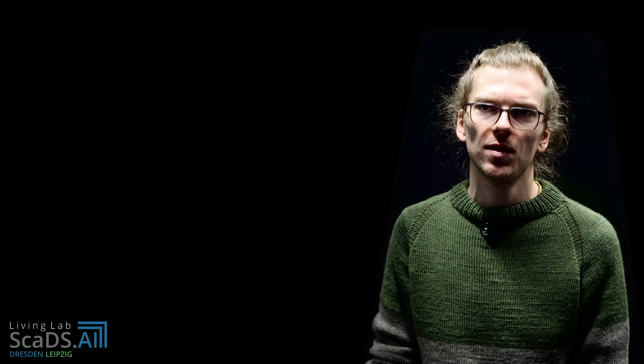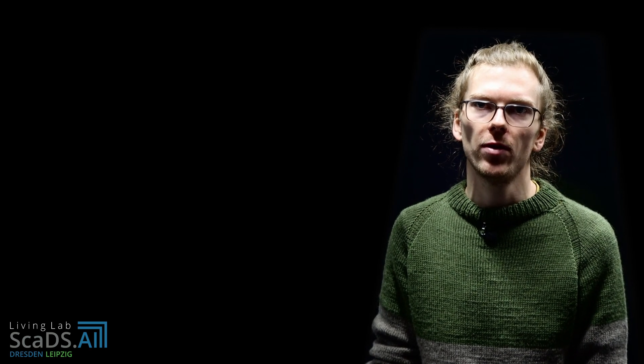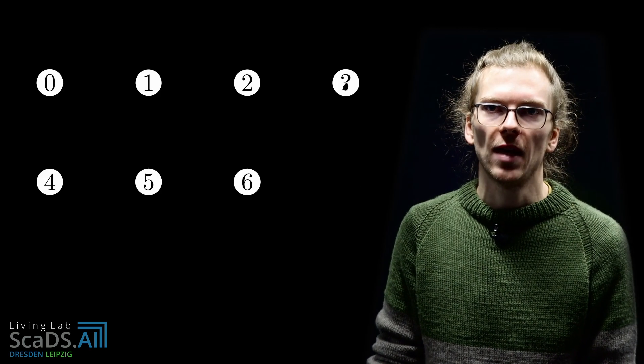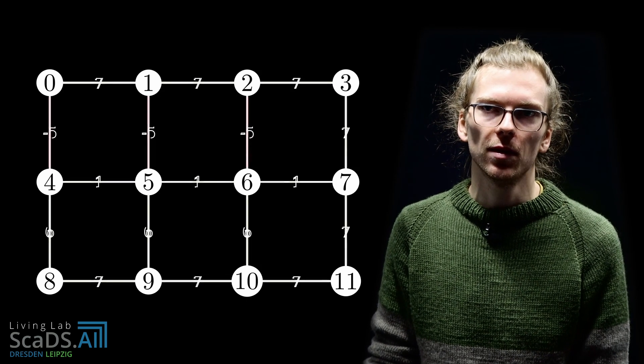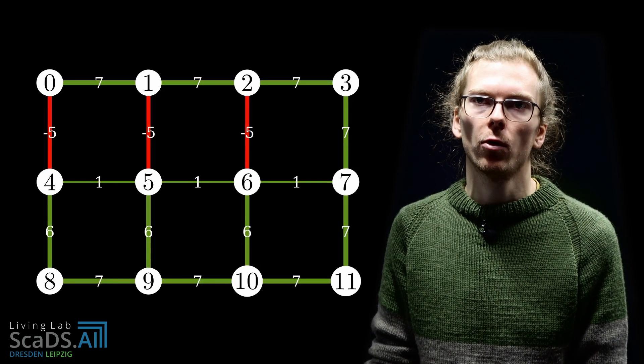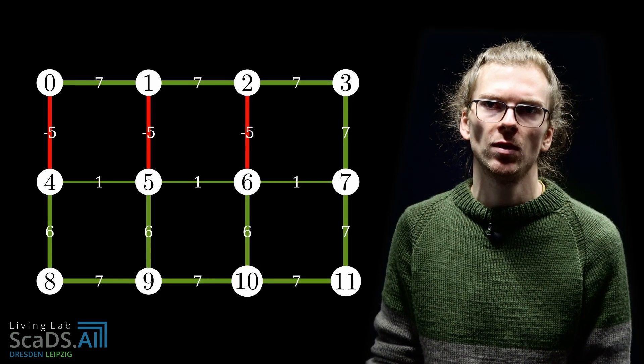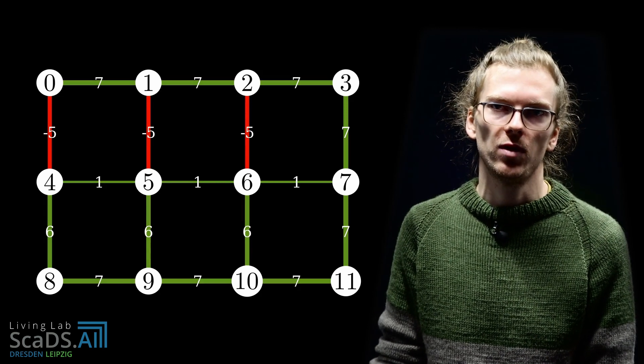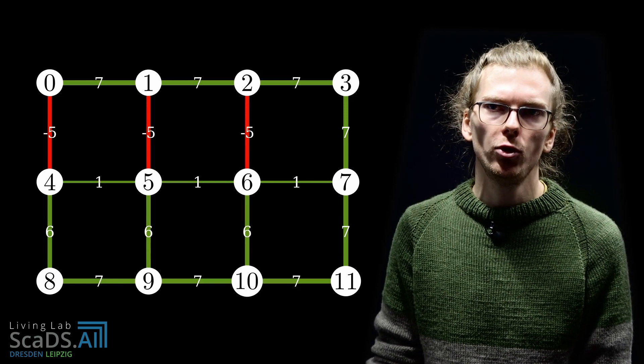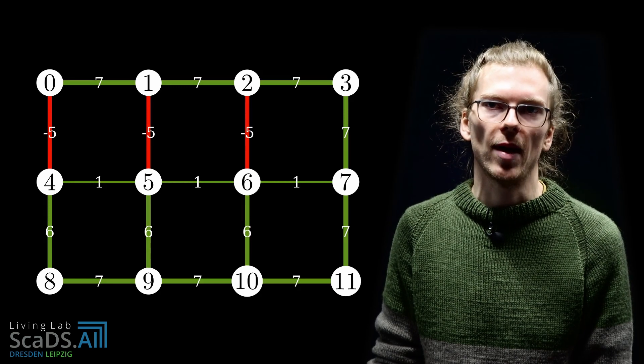Unfortunately, for some instances, the algorithm produces very poor solutions. For example, for costs like here, the greedy algorithm will contract the entire graph into a single component and thus obtain an objective of 0. The optimal solution, however, has an objective of minus 8.